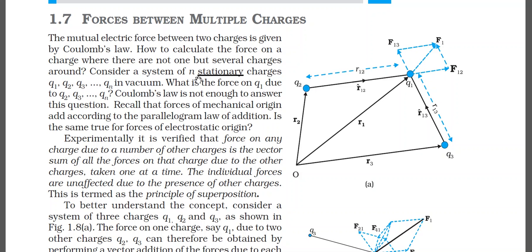Consider a system of N stationary charges Q1, Q2, Q3, ... QN in vacuum. What is the force on Q1 due to the remaining charges Q2, Q3, and QN? Coulomb's law alone is not enough to answer this question, because Coulomb's law deals with only two charges at a time — Q1 and Q2.